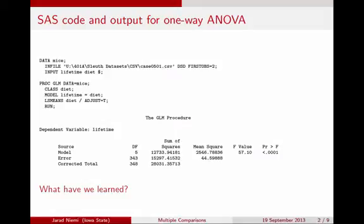Last time when we were talking about the one-way ANOVA F-test, we had this slide showing the ANOVA table with a p-value that was small. That p-value being small meant that we would reject the null hypothesis that all the group means are equal. So my question now is, what have we really learned?